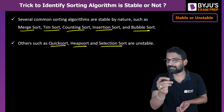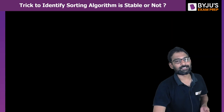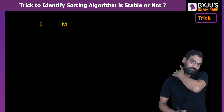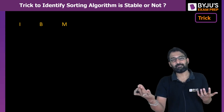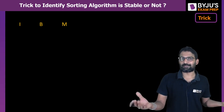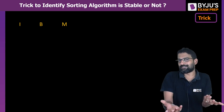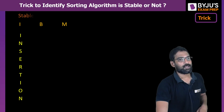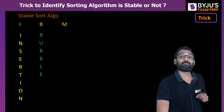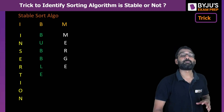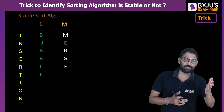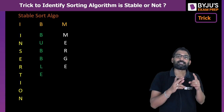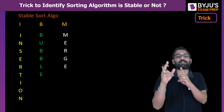To avoid that confusion, here is a very simple trick. Just remember IBM — I, B, M — a very popular company name, so you can easily remember it! I stands for insertion sort, B stands for bubble sort, and M stands for merge sort. These are the stable sorting algorithms.